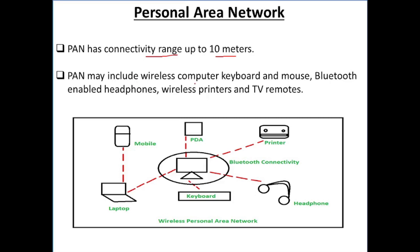PAN includes wireless computer keyboard and mouse, Bluetooth-enabled headphones, wireless printers, and TV remote. These devices are connected to each other by creating a Personal Area Network.